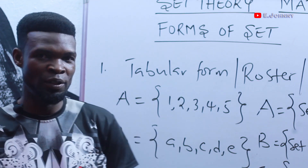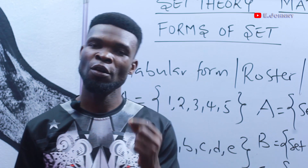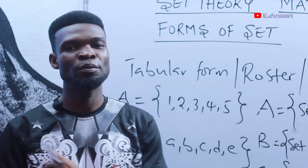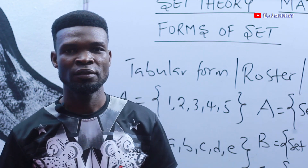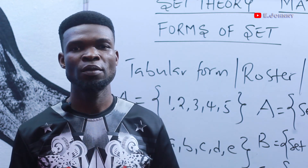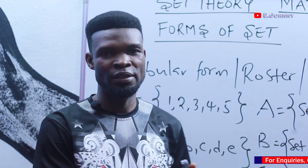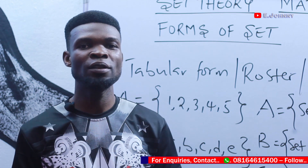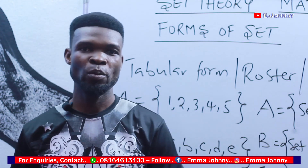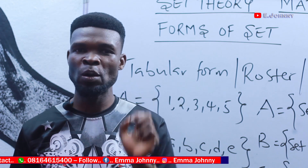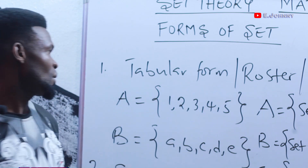To successfully transform sets from set builder form to listed form, it is very important that you understand types of numbers — natural numbers, integers, rational numbers, prime numbers, odd numbers, prime factors, and so on. I expect you to have learned those things in junior secondary school, but I will produce a video on types of numbers. In this context, I'll pick a few relevant ones.